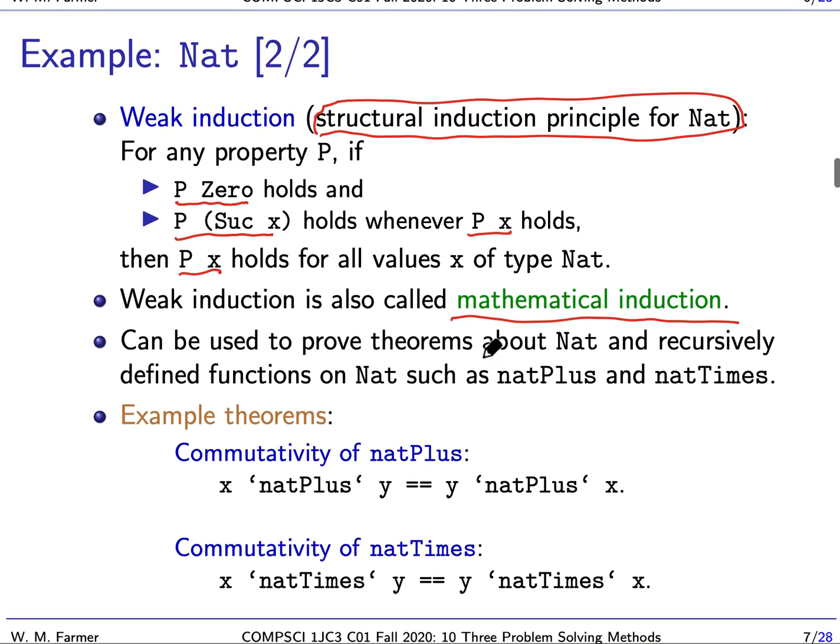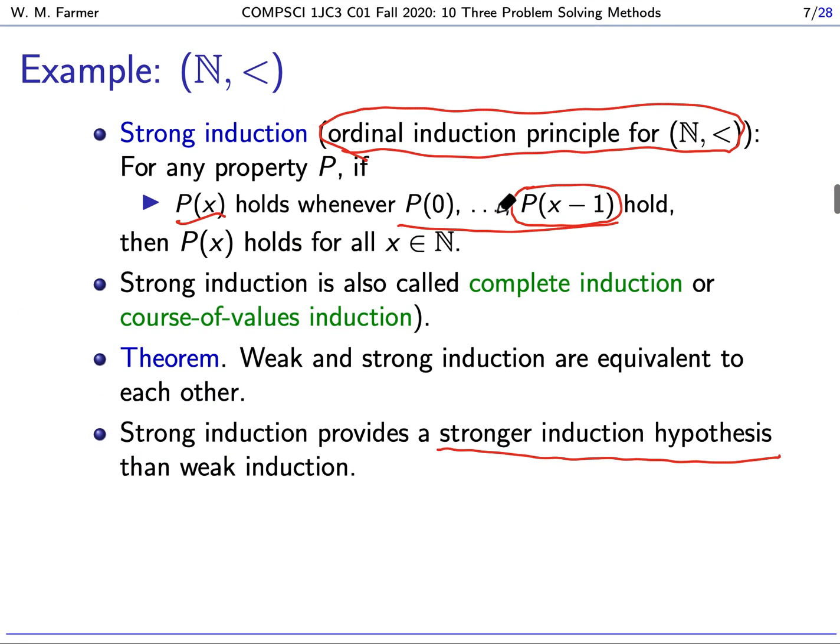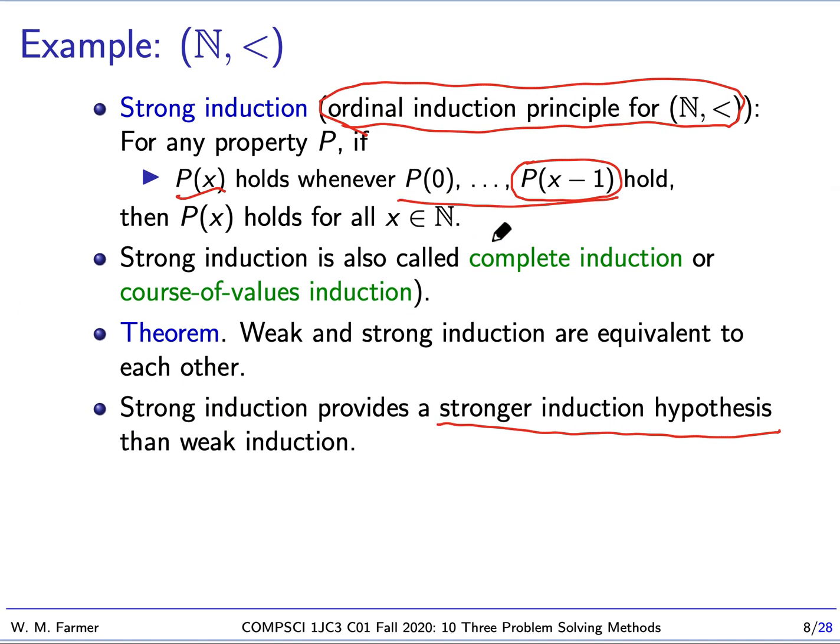It's called strong induction because it provides a stronger induction hypothesis than weak induction. With weak induction, our induction hypothesis is just that P(x) holds. With strong induction, it's P(x-1), P(x-2), P(x-3), everything less than the X that we're looking at.